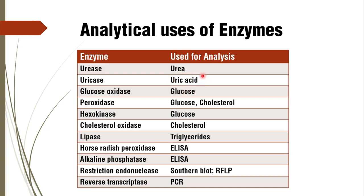For uric acid estimation we use uricase. For estimation of plasma glucose, we use the glucose oxidase-peroxidase method, using two enzymes: glucose oxidase and peroxidase. Similarly, for cholesterol estimation we also use two enzymes: cholesterol oxidase and peroxidase. So glucose oxidase-peroxidase and cholesterol oxidase-peroxidase are used for glucose and cholesterol estimation respectively.